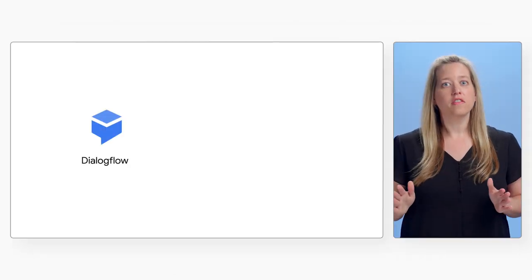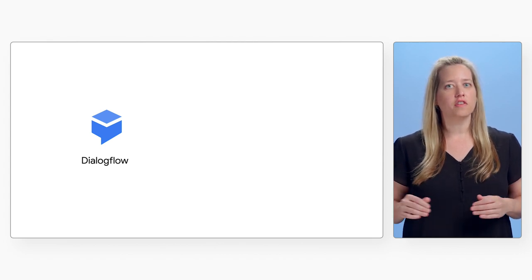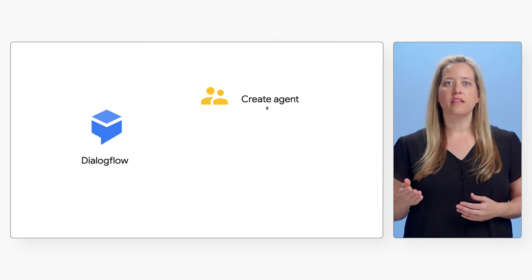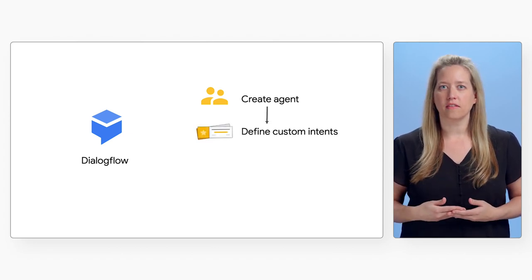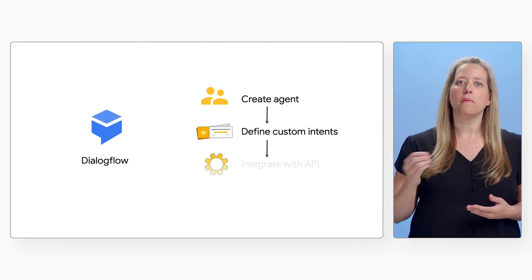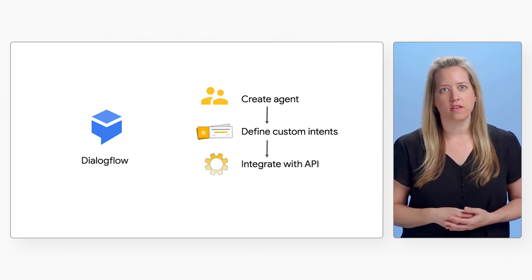So how can you use both of these technologies for building features in your own application? Dialogflow is available to application developers for creating conversational chat interfaces. After creating a Dialogflow agent and defining customized intents and entities, you can use the Dialogflow API to integrate the agent into your application.